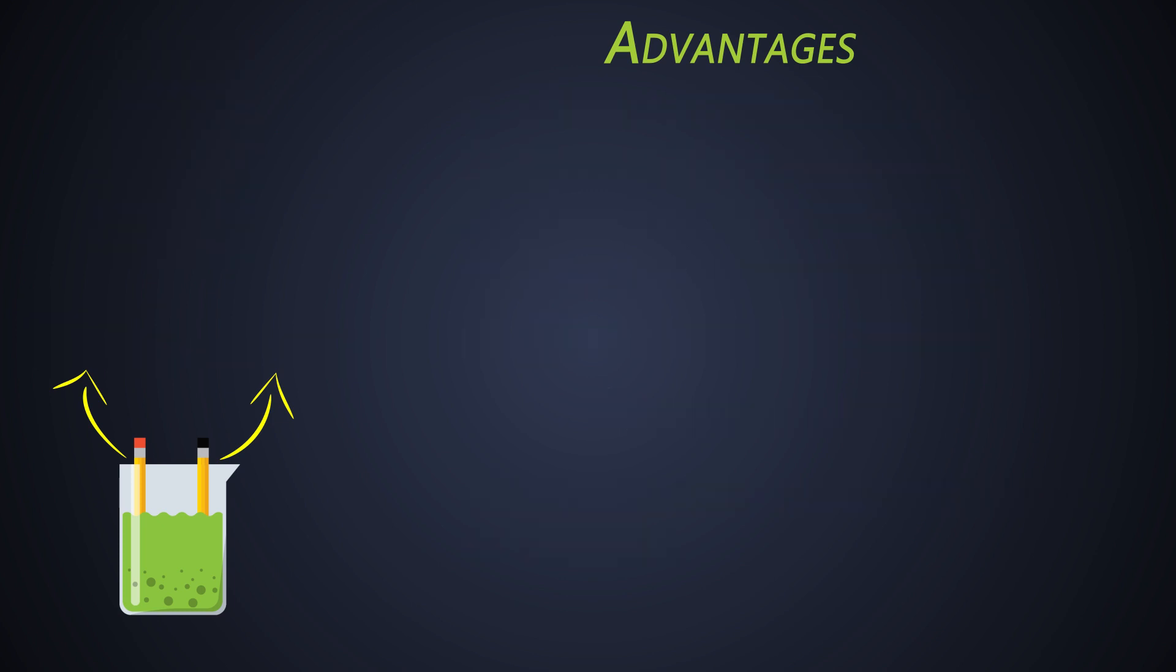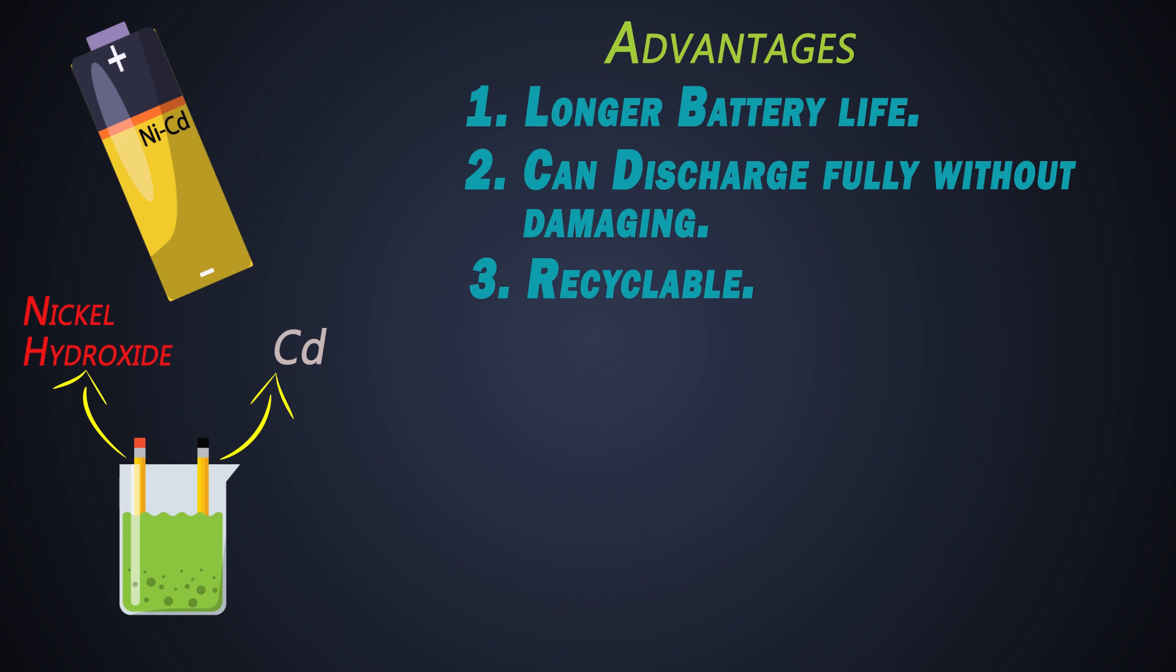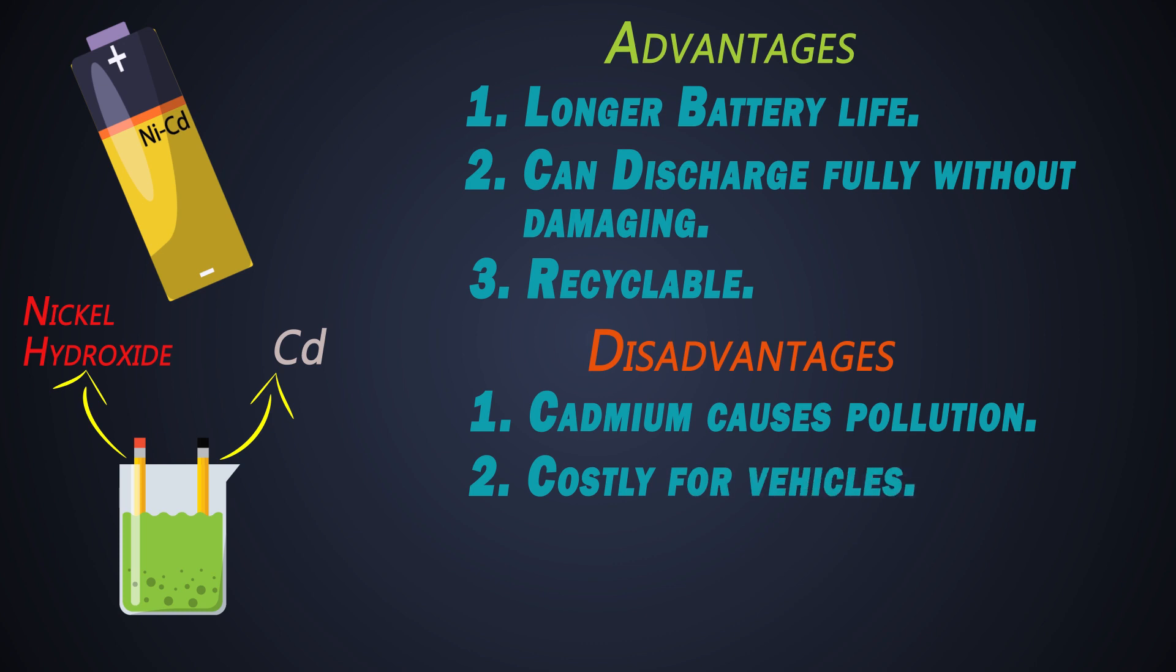Next battery type is nickel cadmium. The positive electrode of this battery is nickel hydroxide, and negative electrode is cadmium. This battery has longer battery life. It can discharge fully without being damaged. It is also recyclable. But the cadmium can cause pollution in case of not being properly disposed. These batteries are costlier for vehicular applications.